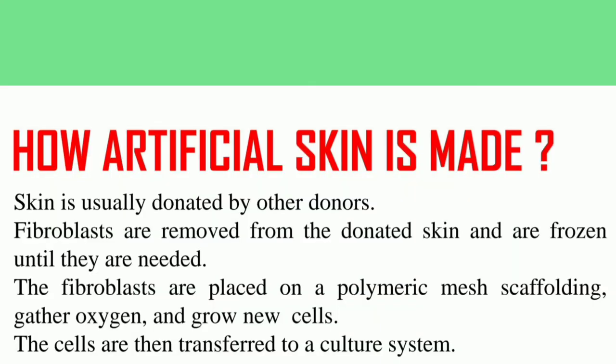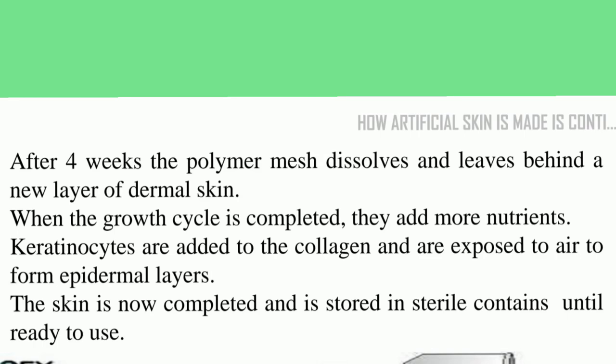Artificial skin is usually made from donated skin. Fibroblasts are removed from this donated skin and frozen. The fibroblasts are then placed on a polymeric mesh so they can gather oxygen and form new cells. This way, a new layer of cells is formed.